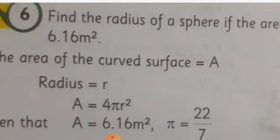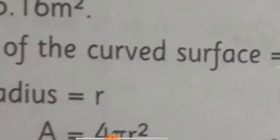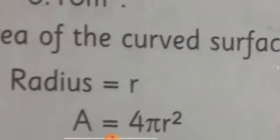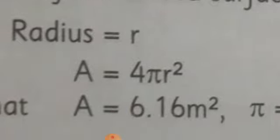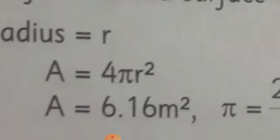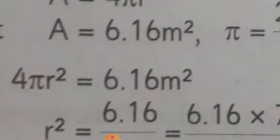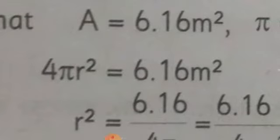We use the formula where we have the radius. In the first example, surface area was given as 6.16 meter squared, and we have to find the radius. We put these values: 4πr² equals 6.16 meter squared. Here we have 4π, so we divide both sides.